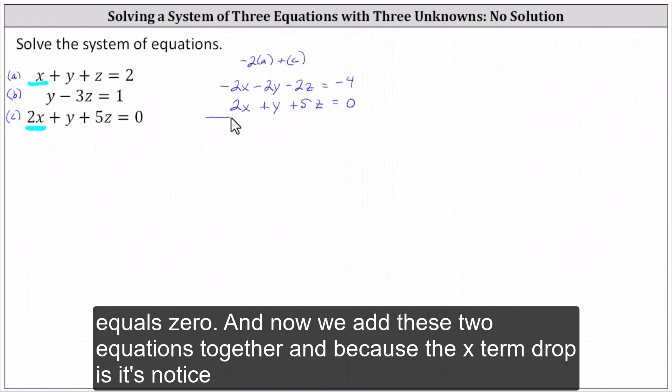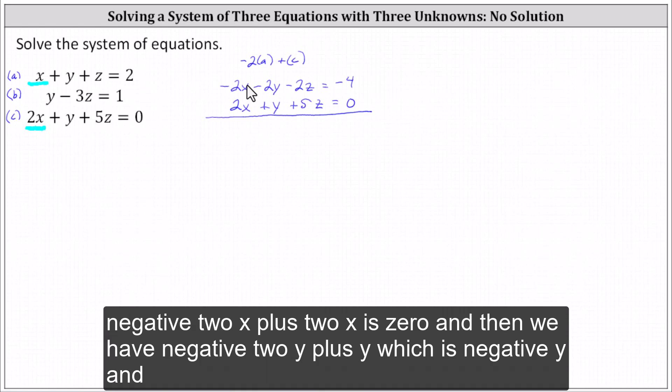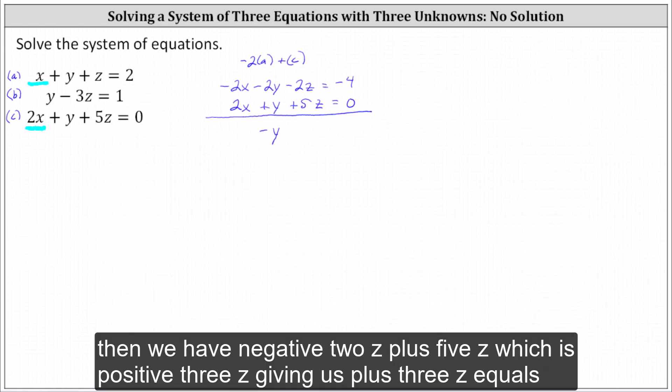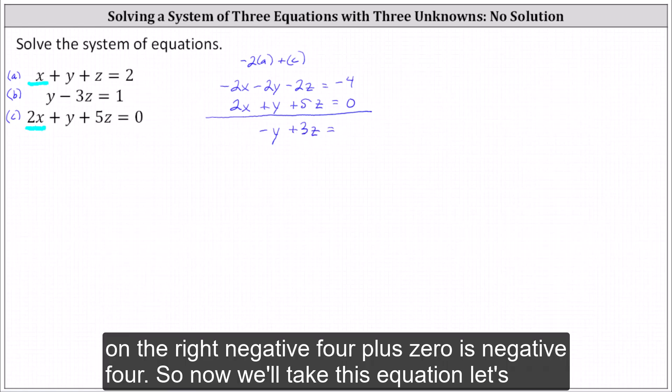And now we add these two equations together. And because the X terms are opposites, notice -2x + 2x is zero. And then we have -2y + y, which is -y. And then we have -2z + 5z, which is positive 3z, giving us +3z equals on the right -4 + 0 is -4.